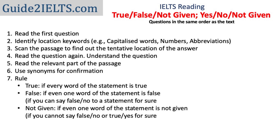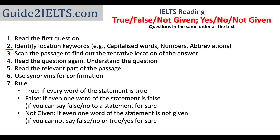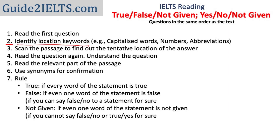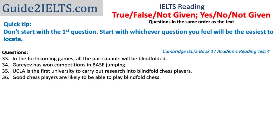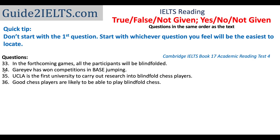Our next step is identifying location keywords in the questions and finding the tentative location of the answer in the passage. You may want to start with the second or third question first if it would be easier to locate. For instance, in these True/False/Not Given questions, questions 34 and 35 have more obvious location keywords — capitalized words, abbreviations, and the word 'first' — so you might find it more efficient to look for question 34 first, then search for question 33, knowing it will appear before 34 in the passage.